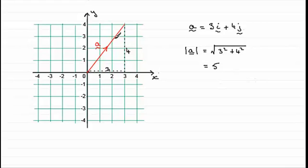So clearly, this isn't a vector that is 1 unit long. We can see that it's 5 units long.